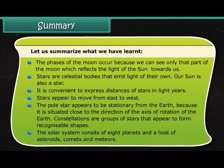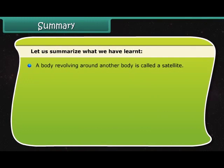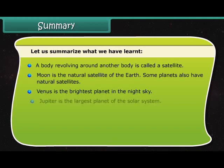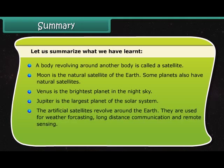The solar system consists of eight planets and a host of asteroids, comets and meteors. A body revolving around another body is called a satellite. Moon is the natural satellite of the earth. Some planets also have natural satellites. Venus is the brightest planet in the night sky. Jupiter is the largest planet of the solar system. The artificial satellites revolve around the earth. They are used for weather forecasting, long-distance communication and remote sensing.